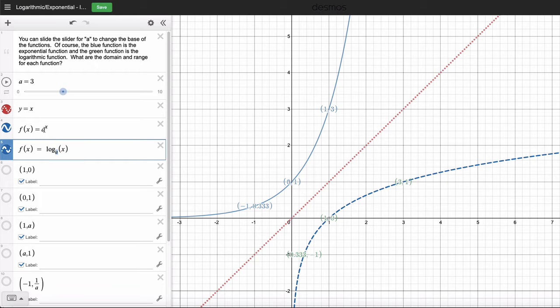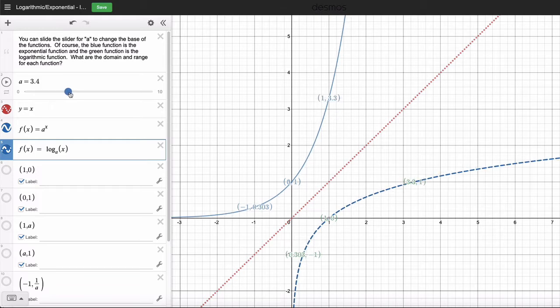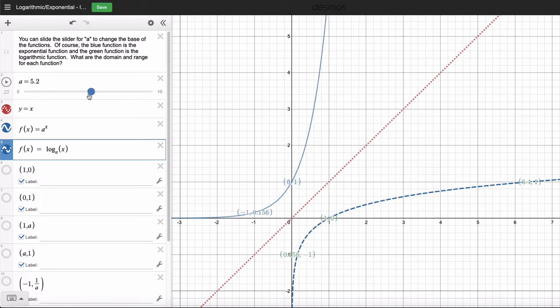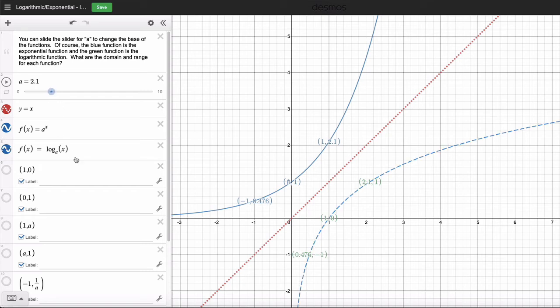Notice I have this a, and this a is the same. So if I change the base, both of these functions are going to move, and they'll remain reflections of each other. If I squeeze it this way, it'll get closer and closer and closer.